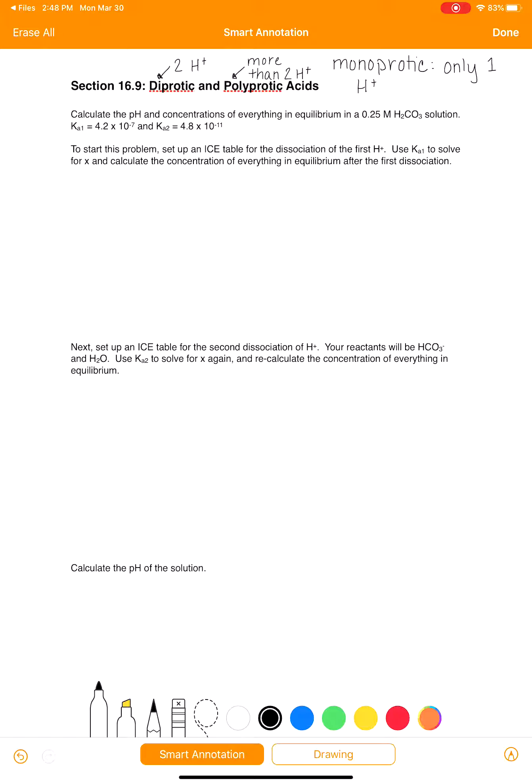When we have an acid that is diprotic or polyprotic, each one of the hydrogen ions gets its own Ka value. So for this problem that we're going to work on, we have H2CO3. It has two hydrogen atoms, and that means it's going to have two Ka values. It has a Ka1 and it has a Ka2. The Ka1 corresponds to the first hydrogen that comes off of the molecule, and the Ka2 corresponds to the second hydrogen that comes off of the molecule.